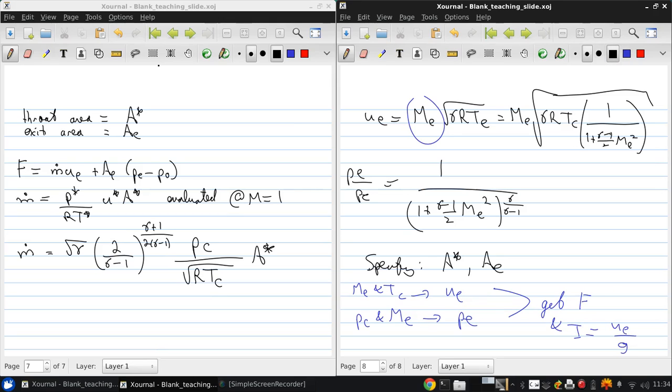So using this set of equations, we can basically find everything we want to know about a rocket knowing only the conditions in the combustion chamber, the throat area, and the exit area.